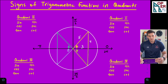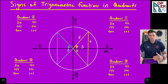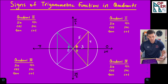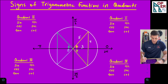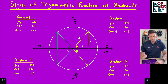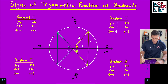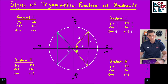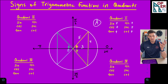Looking at this triangle in quadrant one, three is positive because we move right from the origin, and four is positive because we move up. So sine of theta is opposite over hypotenuse — four over five — positive. Cosine is adjacent over hypotenuse — three over five — also positive. Tangent is opposite over adjacent — four over three — also positive. The inverses cosecant, secant, and cotangent are also all positive. So in quadrant one, all functions are positive. I'll put an 'A' there to represent that.